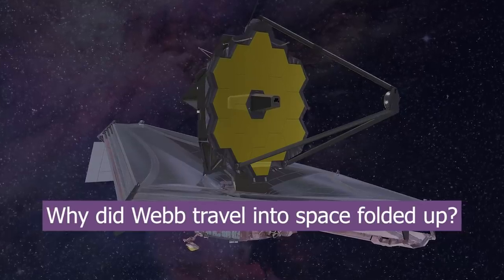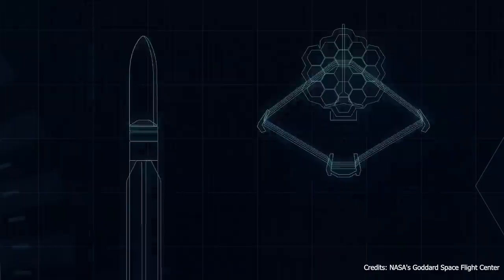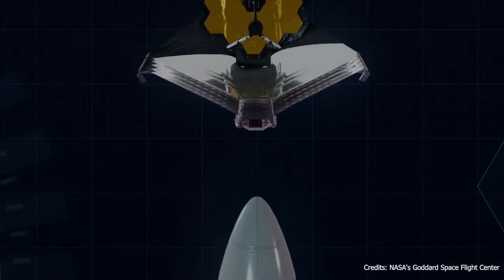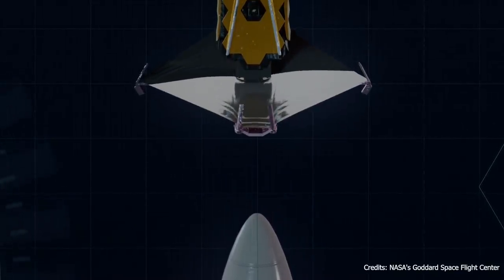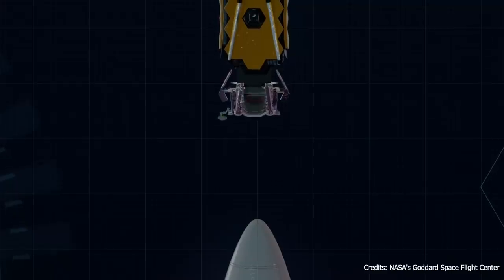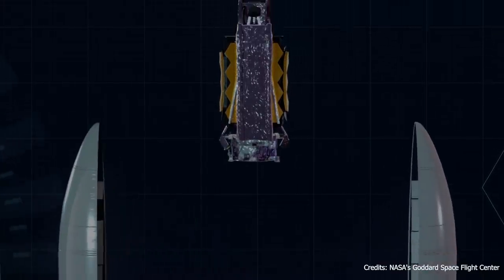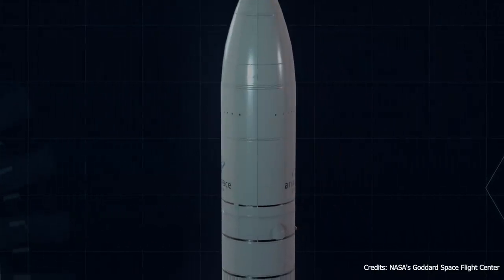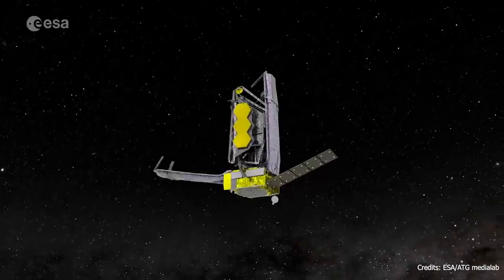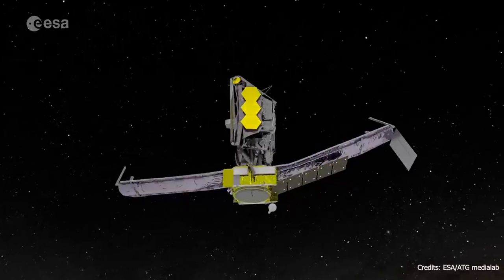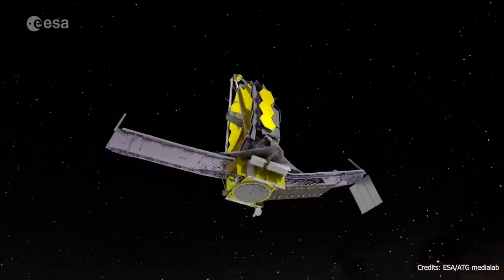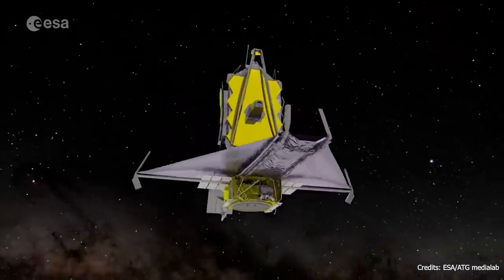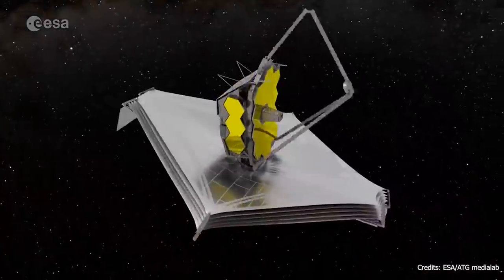Why did Webb travel into space folded up? With its 6.5-meter mirror and 22 by 10-meter sunshield, Webb is the largest telescope ever placed in space. It is simply too big to fit into a rocket. For this reason, the engineers had to develop extremely complicated, origami-like technologies that would allow for the correct unfolding of the telescope in space. Fortunately, by now, James Webb has been fully and successfully deployed.